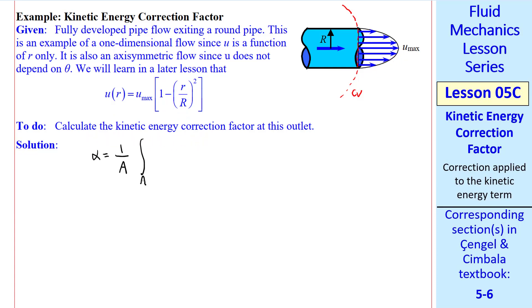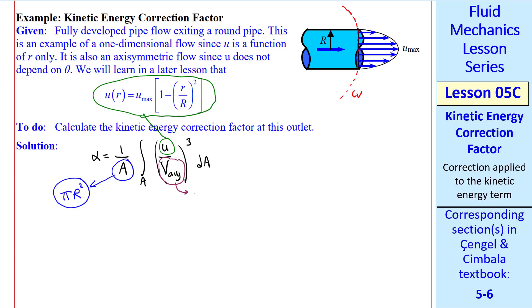We'll learn in a later lesson that this is the equation for this velocity profile. So let's calculate α. Well, as we just defined, α is 1 over A times the integral over that outlet A, u over v_avg cubed dA. Now let's analyze this. The cross-sectional area is πR², since this is a round pipe of radius R. This u is u(r), and we need to calculate v_avg. Well, v_avg is just 1 over A times the integral from 0 to R,